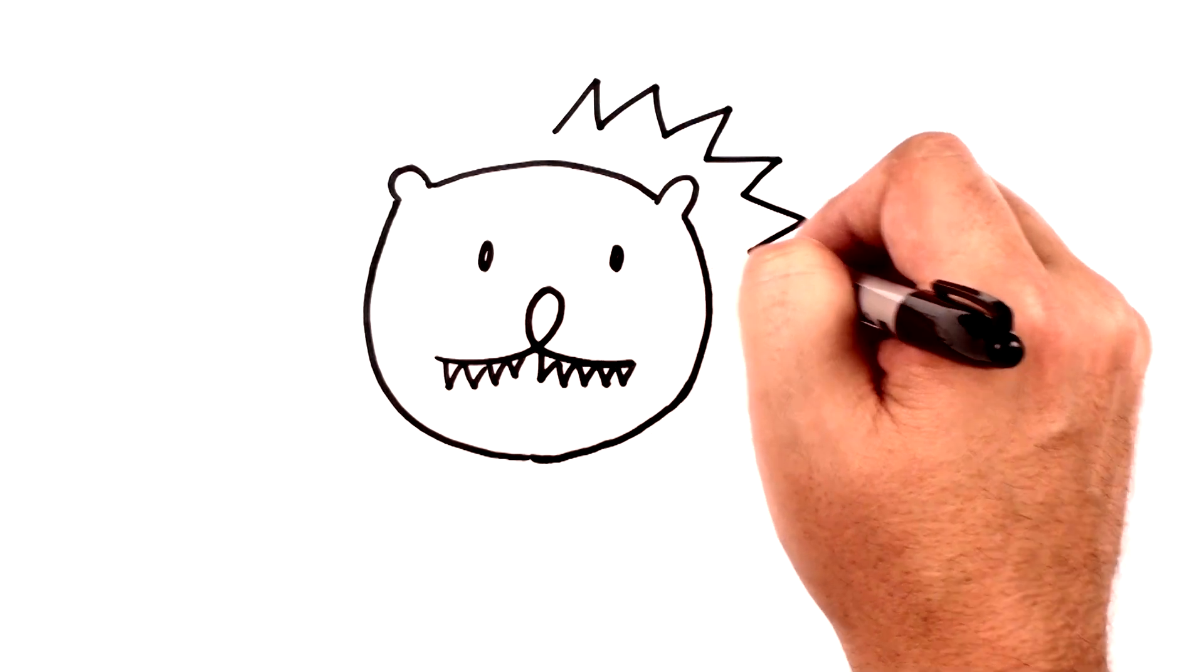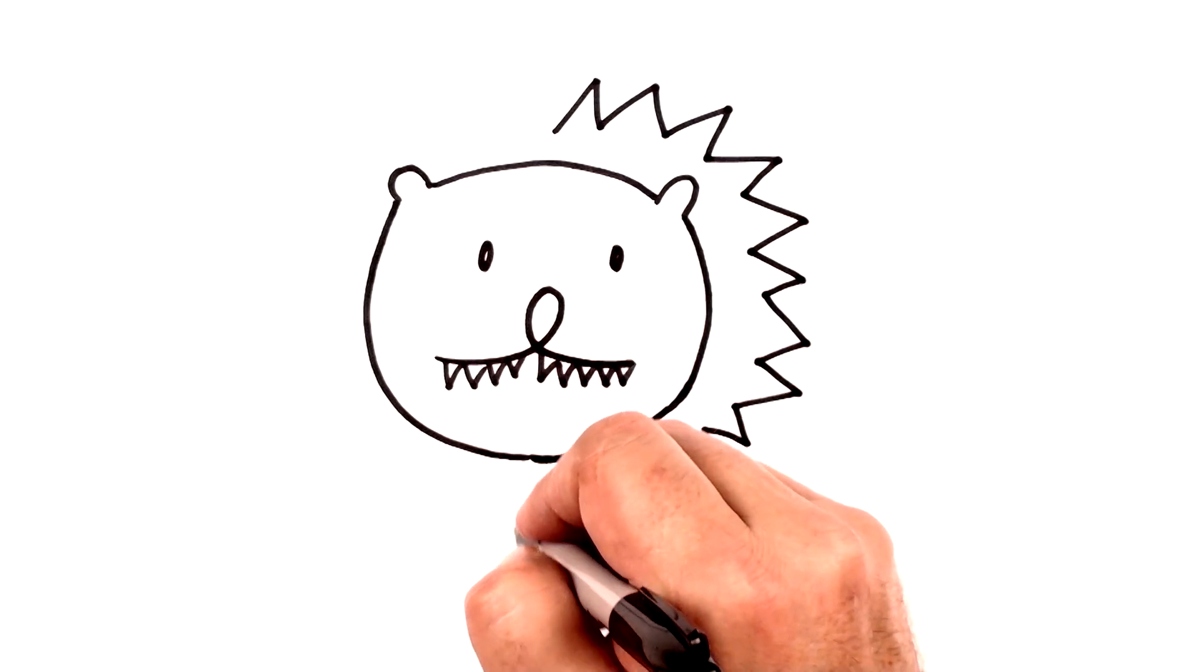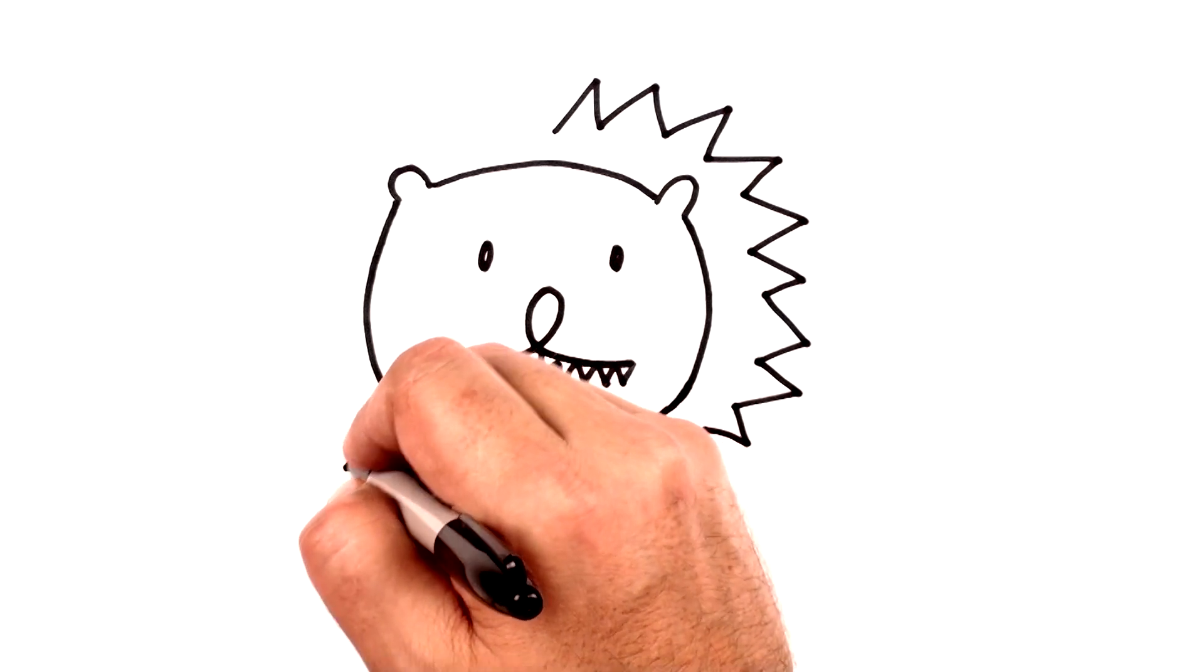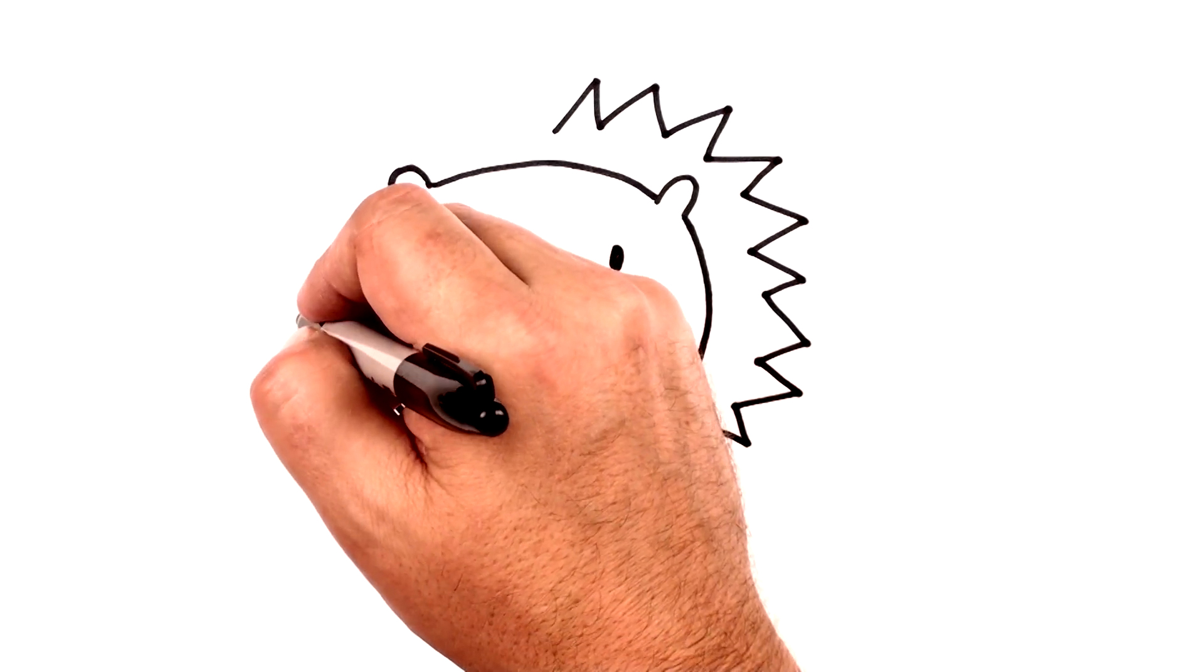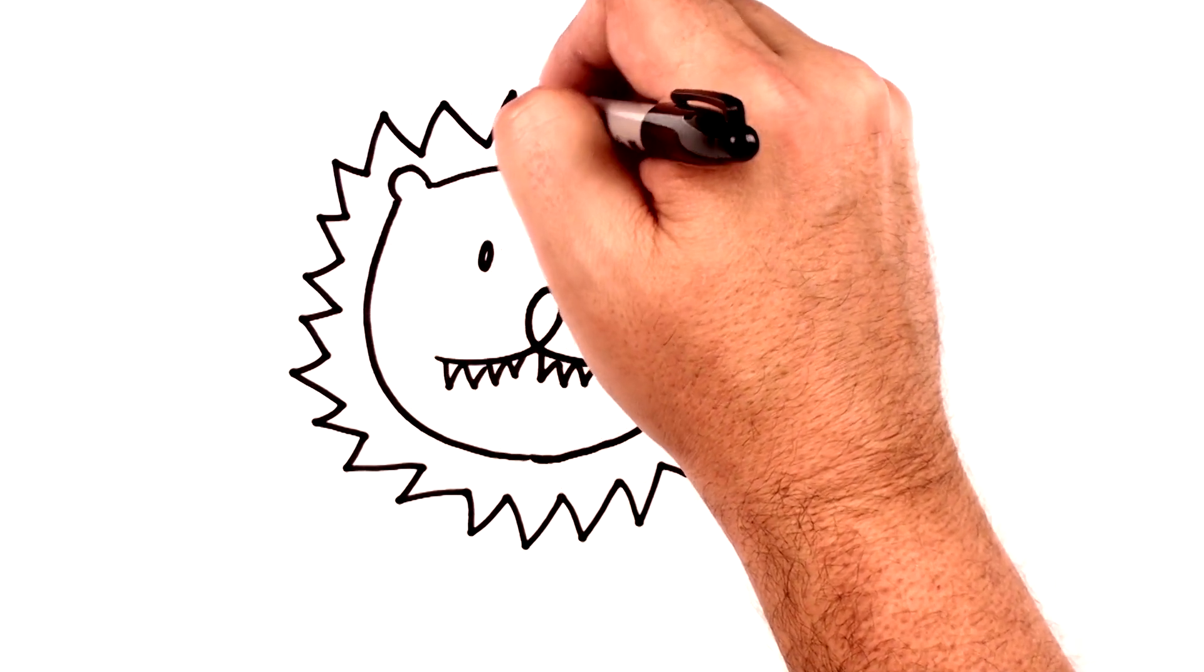So I took a simple shape there, a simple curve and turned it into a lion just like Kathy shows. She goes on with some additional shapes and I'll show you what some of those shapes are.